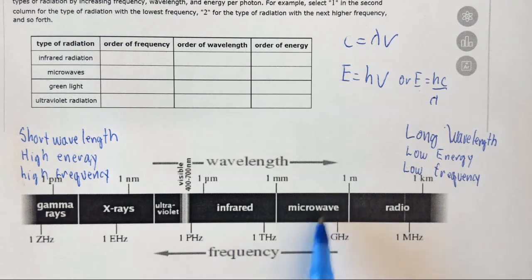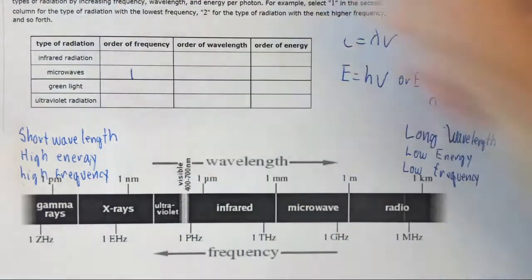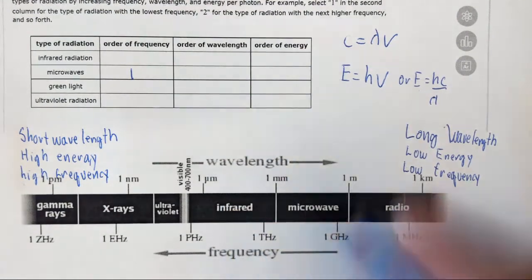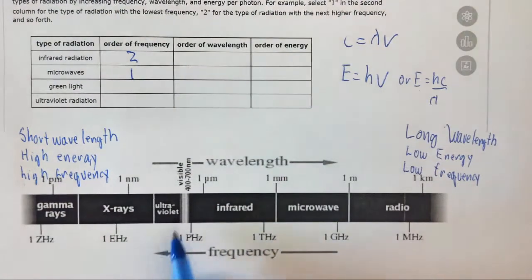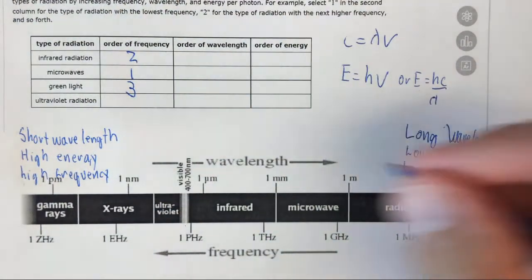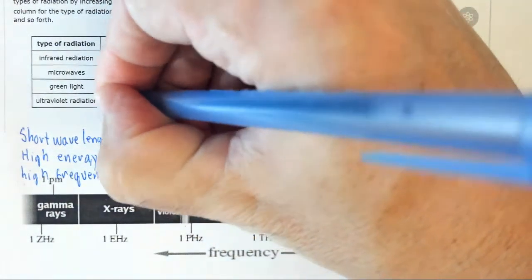So in this case microwave is one, infrared is two, visible light in particular green light is three, followed by ultraviolet, which is four.